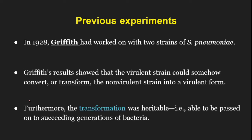In the previous lecture, I explained the experiments carried out by Frederick Griffith using two strains of bacteria, Streptococcus pneumoniae. In 1928, Griffith published his research, and his results showed that the virulent strain — the smooth strain — could somehow convert or transform the non-virulent R strain into the virulent form. Furthermore, it was found that transformation was heritable. By performing this experiment, Griffith came up with his idea of a transforming principle, but he did not conclude anything about the nature or biochemical properties of the transforming principle.